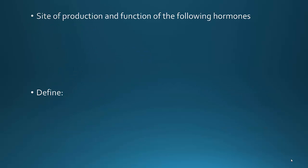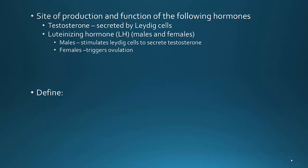Let's look at the site of production and function of the following hormones. First is testosterone. Testosterone is secreted by the Leydig cells in the testes. Testosterone is important for sperm production, but it's also important for the secondary sex characteristics in males. Luteinizing hormone, or LH — in males, it stimulates Leydig cells to secrete testosterone.